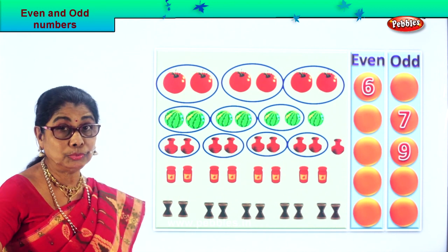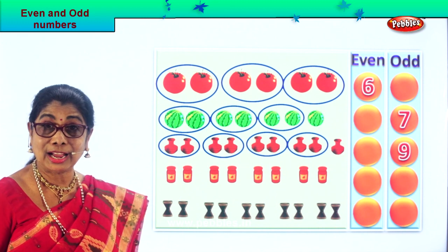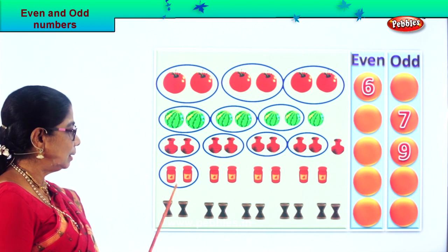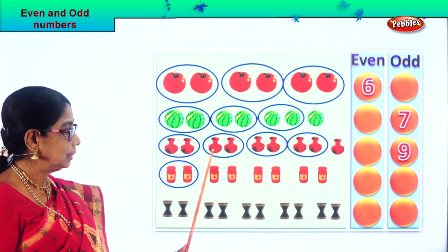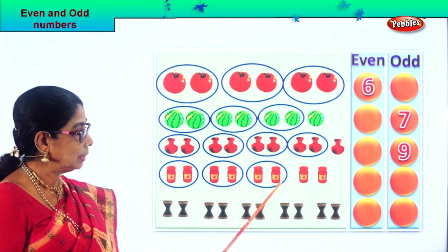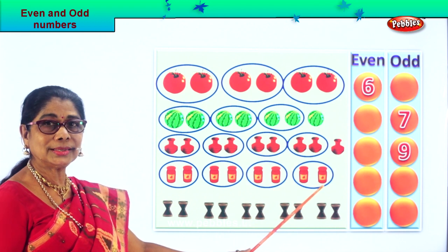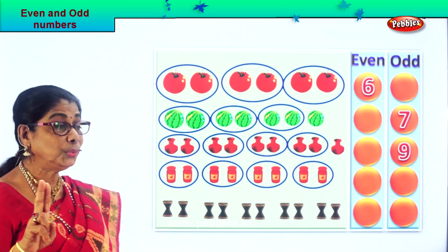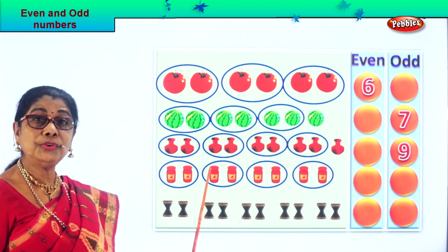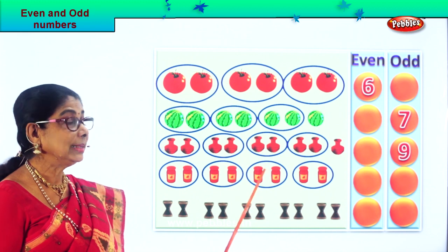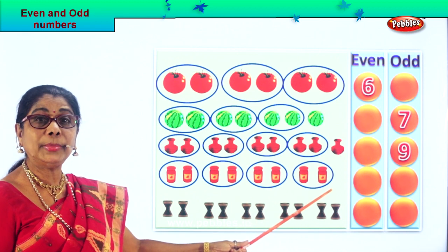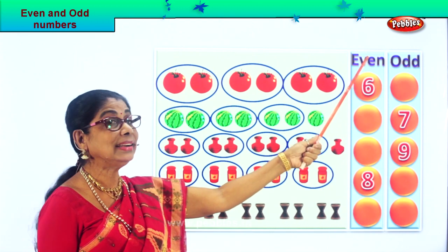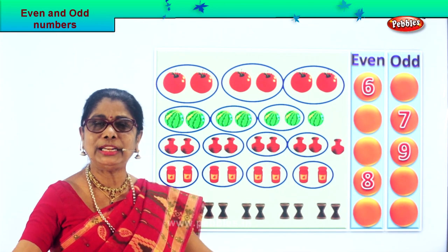Now we have some jam bottles — I'm sure you love jam. Let's count: one, two — circle; one, two — circle; one, two — circle; one, two — circle; one, two — circle; one, two — circle. Count in twos: two, four, six, eight. The number is eight, so we write eight here and it's an even number. Everybody's paired up.